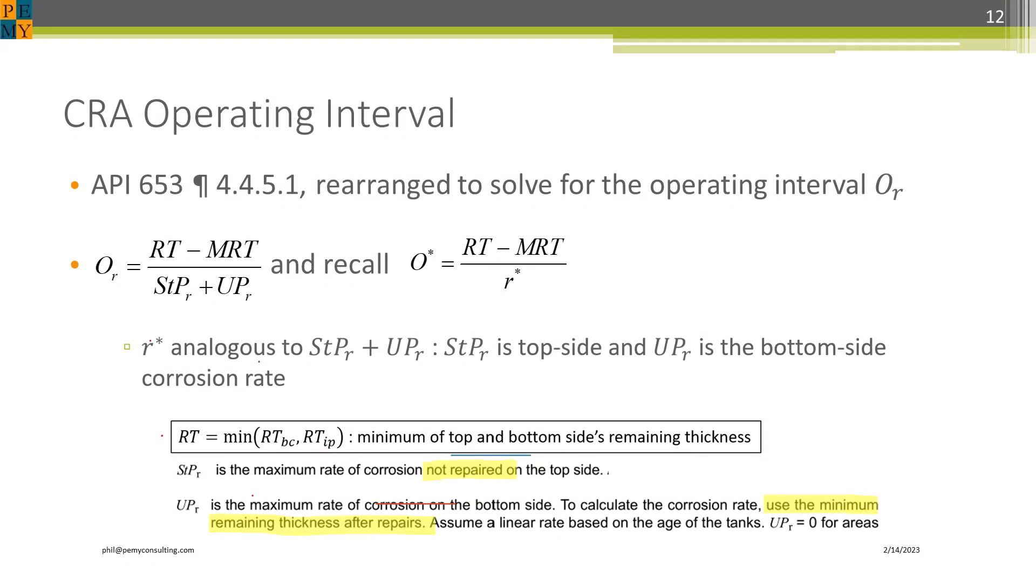The CRA method for determining the interval is shown here, and these equations are in API 653. The definitions show that the STPR is equivalent to the LCR corrosion rate on the top side, so no issue here. But the UPR is based on repair-to thickness, not thinning. In fact, it has nothing to do with corrosion.